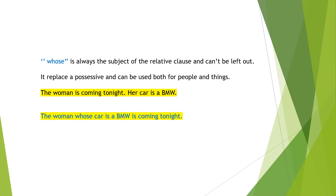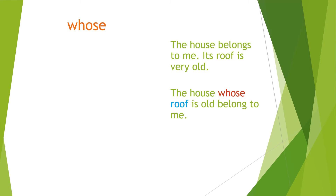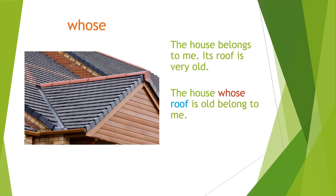Now we are going to talk about 'whose.' 'Whose' is always the subject of the relative clause and can't be left out. It replaces a possessive and can be used for people and things. For example: 'The woman is coming tonight — her car is a BMW' becomes 'The woman whose car is a BMW is coming tonight.' For things: 'The house belongs to me — its roof is very old' becomes 'The house whose roof is old belongs to me.' You can use 'whose' for people and for things.